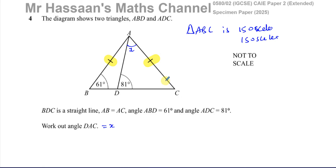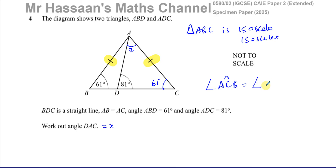In an isosceles triangle, at the base of the two equal sides, you have two angles which are equal. So this angle is 61 degrees, and we can say angle ACB equals angle ABC. The reason for that is the base angles of an isosceles triangle are equal. So these two angles are both 61 degrees.